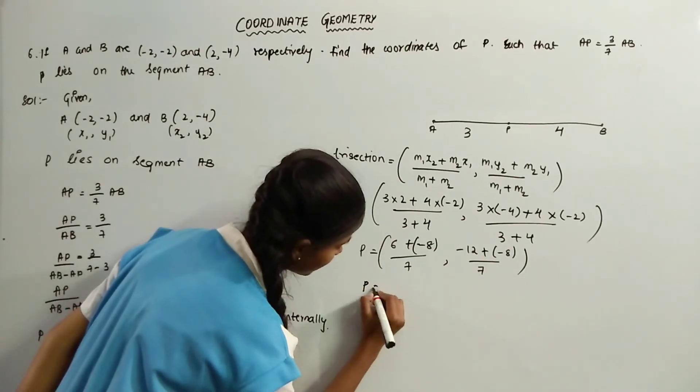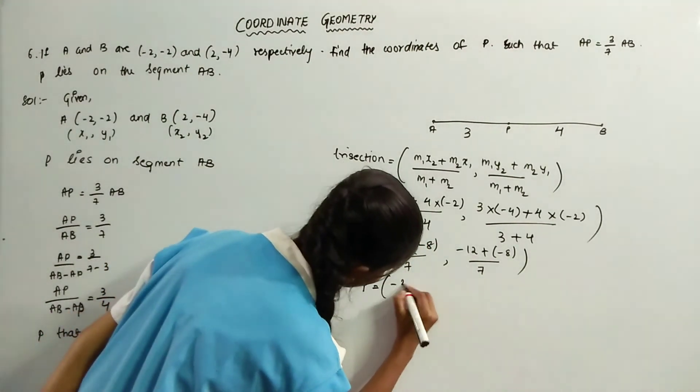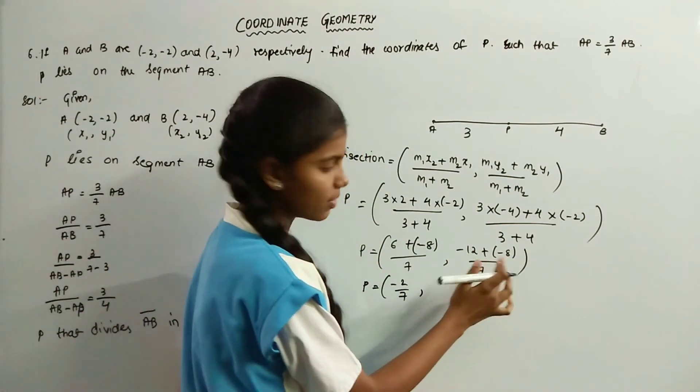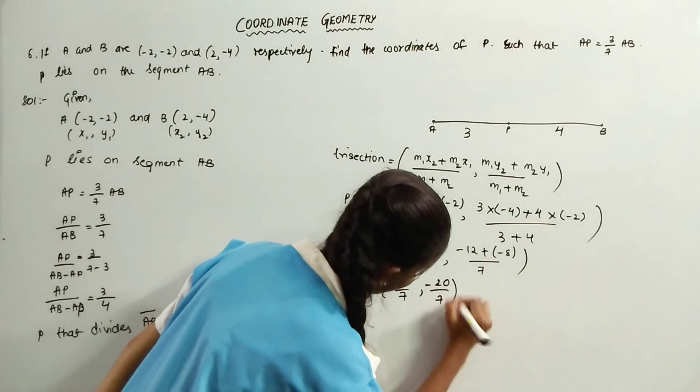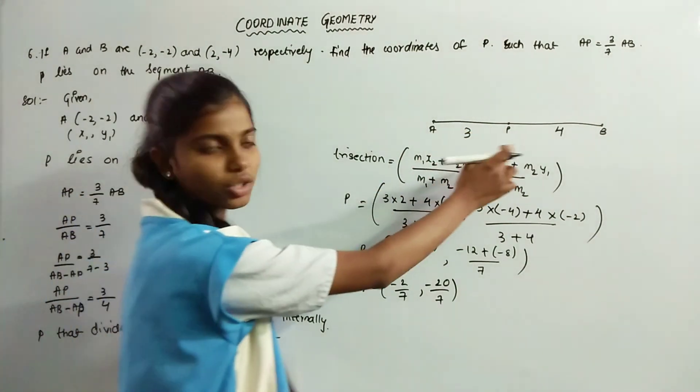P is equal to 6 minus 8 is minus 2 by 7, comma, minus 12 minus 8 is minus 20 by 7. We got the coordinate P that divides the line segment AB into 3 is to 4.